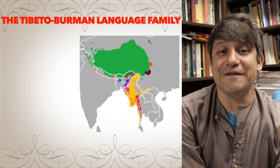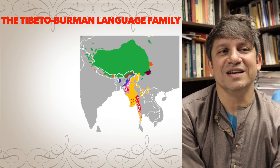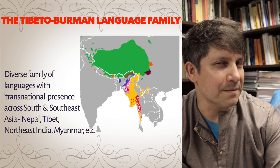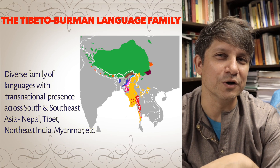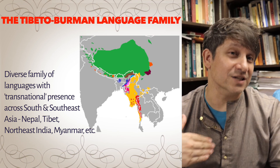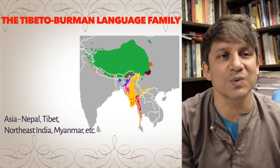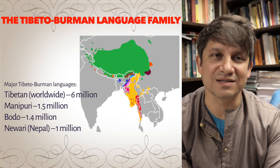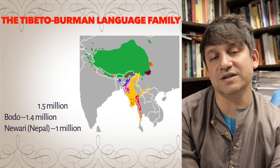Finally, the fourth family — usually neglected in discussions of South Asian languages — is Tibeto-Burman. This family has a very diverse tree with many small, isolated subgroups within indigenous communities in the mountainous areas of Nepal, northeastern India, and Myanmar, and it has also spread across Southeast Asia. The major language of this group is Tibetan, while Newari in Nepal is quite prominent. In India, Manipuri and Bodo account for the largest number of speakers.